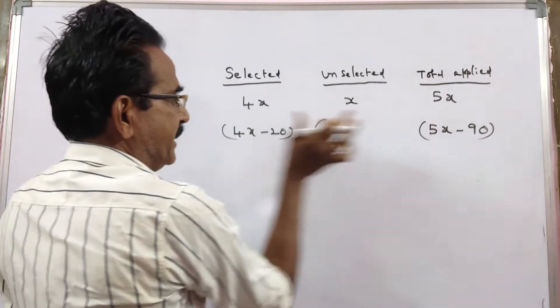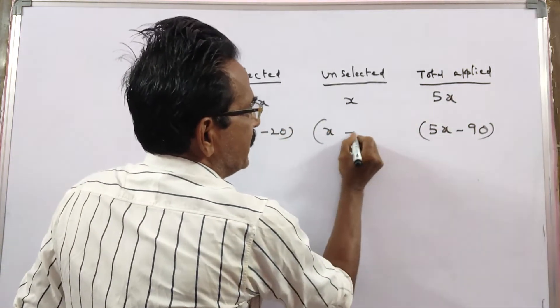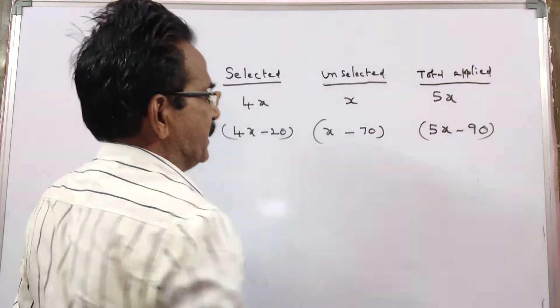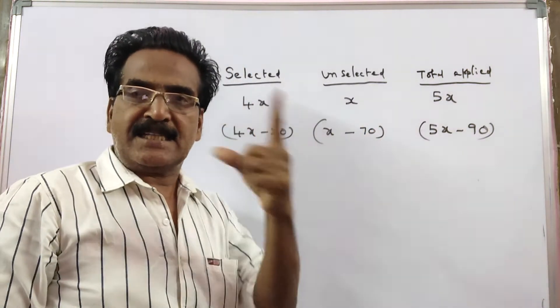So 5x minus 90 minus 4x minus 20 is x minus 70. So now the ratio between selected and unselected is 5 is to 1.